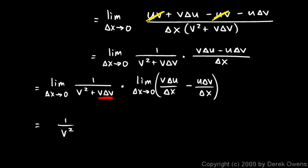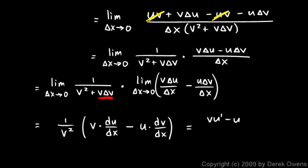So the first part becomes 1 over v squared. Then delta-u over delta-x becomes du/dx, giving us v times du/dx. And delta-v over delta-x becomes dv/dx, giving us u times dv/dx. This is equivalent to v times u-prime minus u times v-prime, over v squared — exactly what we said before: low d high minus high d low over low low. That completes the proof of the quotient rule.